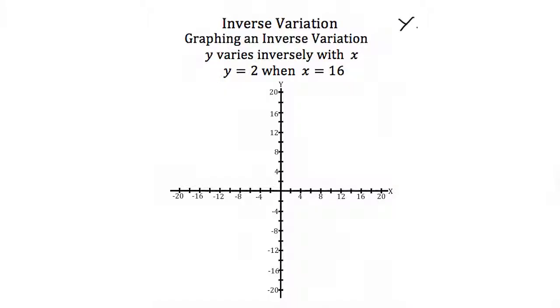Remember, inverse variations look like y equals k over x. Plugging in y equals 2 and x equals 16, we get k equals 32. So we're graphing y equals 32 over x. Let's create a table of values to plot this.